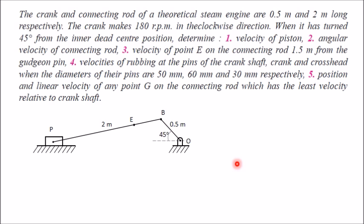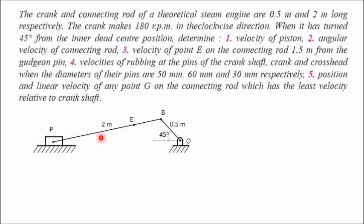In this video I will explain velocity analysis of a slider crank mechanism using the relative velocity method. For this example, a crank of length 0.5 meter is revolving in the clockwise direction at 180 rpm. The connecting rod length is given as 2 meters, and we have to determine the velocity of the piston and the angular velocity of connecting rod BP.